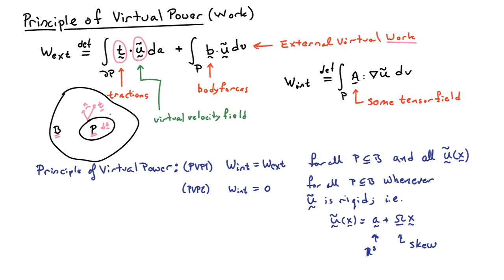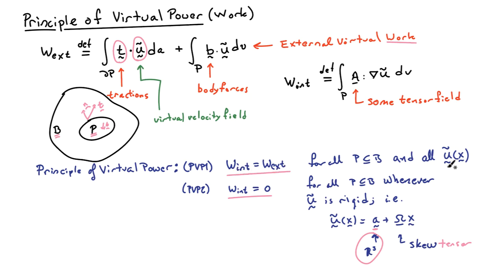Whenever the virtual velocity field can be written as a fixed vector in R³ — call that A — plus a skew tensor omega times the position, that constitutes a rigid field. So the second part simply says that whenever you have a rigid virtual velocity field, the internal virtual power is equal to zero, and the first part says the internal virtual power always equals the external virtual power, no matter what virtual velocity field or part of the body you choose.